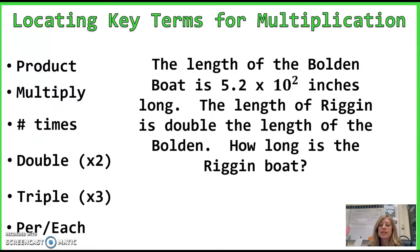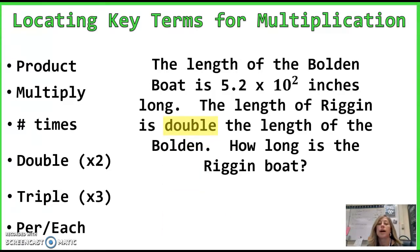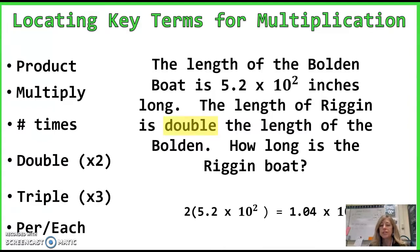The next question: The length of the Bolden boat is 5.2 times 10 to the 2nd inches long. The length of Riggan is double the length of Bolden. How long is the Riggan boat? The key word is double — double means to multiply by 2. So 2 times 5.2 times 10 to the 2nd equals 1.04 times 10 to the 3rd. Please check it on your calculator to make sure.